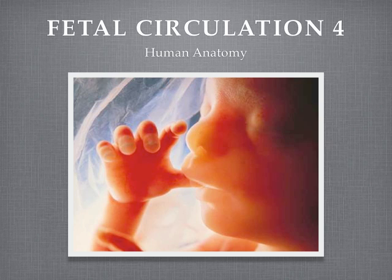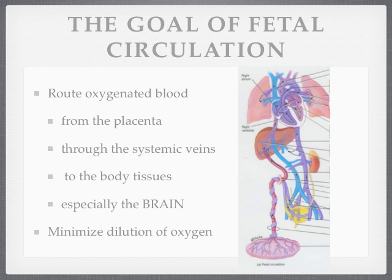Here we are on the fourth lecture of fetal circulation. We're looking at one more bypass to normal adult circulation in order to understand what's going on in circulation and oxygenation of blood in the fetus. Remember, the goal of fetal circulation is to route oxygenated blood in the best quality possible to the brain.